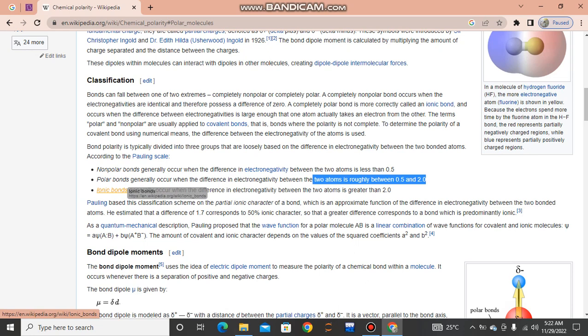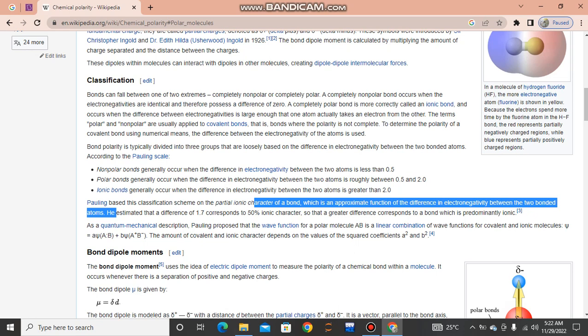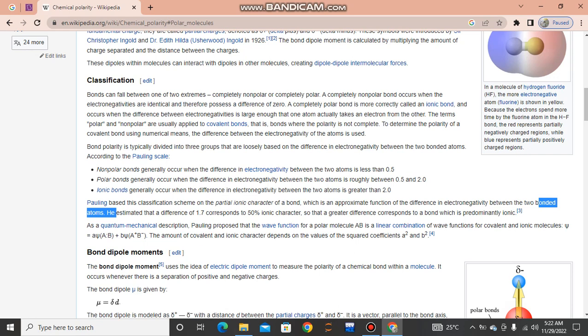Ionic bonds generally occur when the difference in electronegativity between the two atoms is greater than 2.0. Pauling estimated that a difference of 1.7 corresponds to 50% ionic character, so that a greater difference corresponds to a bond which is predominantly ionic.